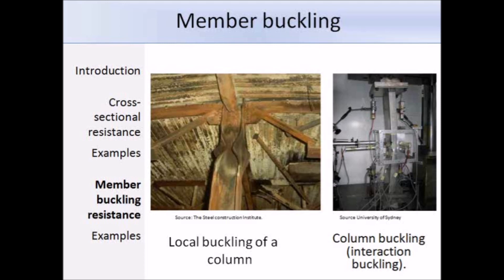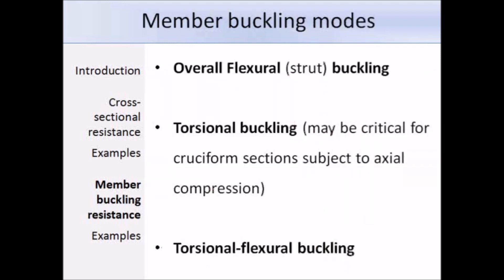There are a few different buckling modes. The first is overall flexural buckling, which will control the design of compression members in most cases. In this buckling mode, the column will fail by excessive deflection in the plane of the weaker principal axis. The second mode is torsional buckling, where a column fails by twisting about the longitudinal axis. This is unlikely for hot-rolled sections but may be critical for cruciform sections.